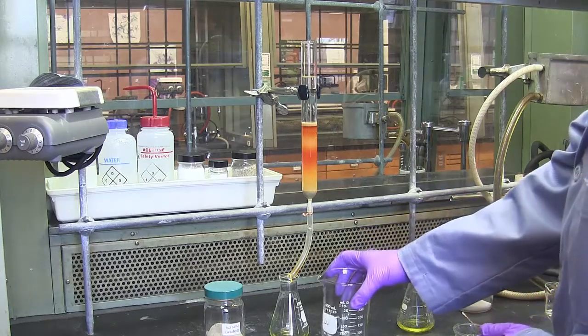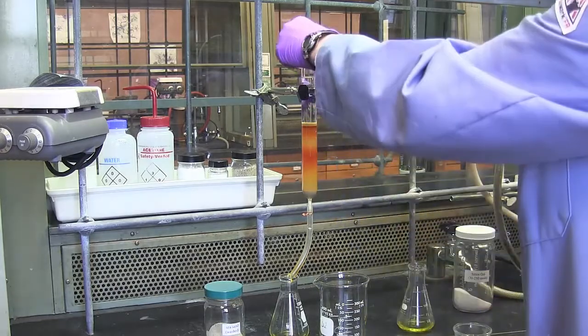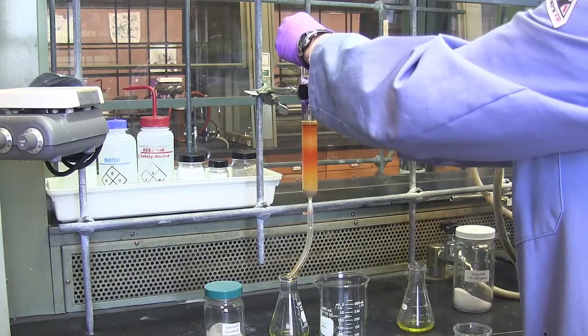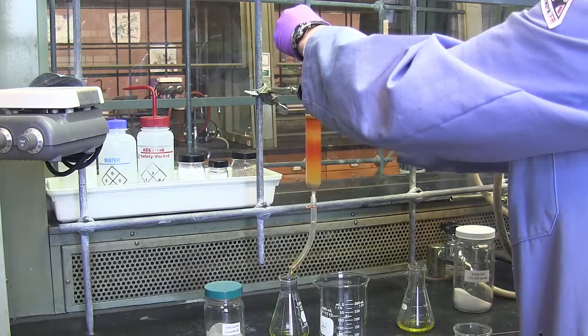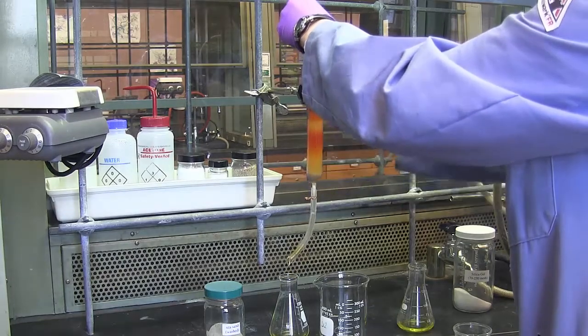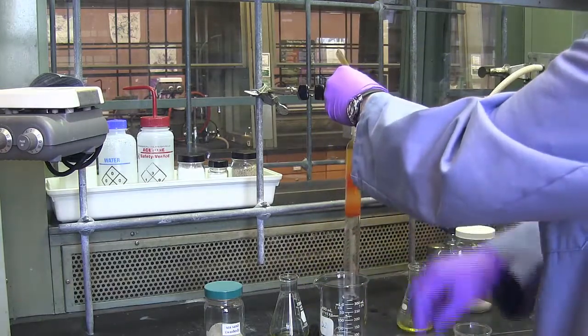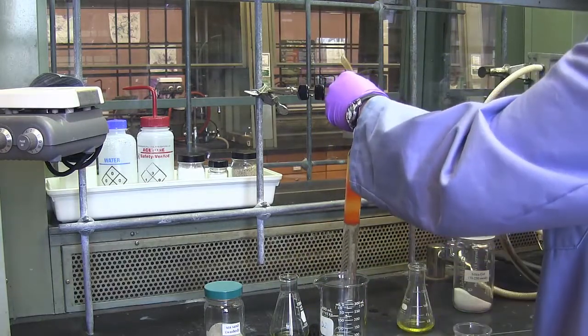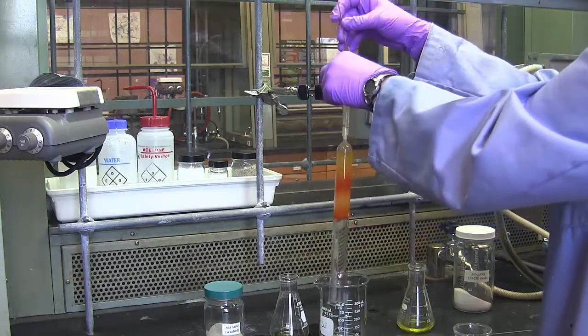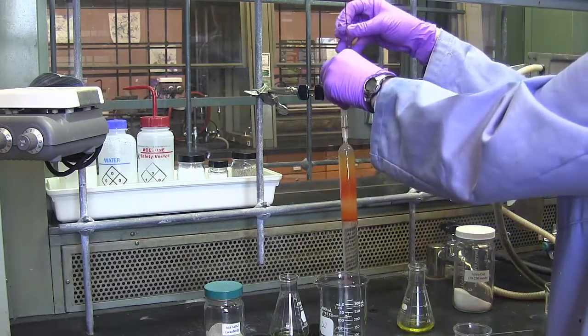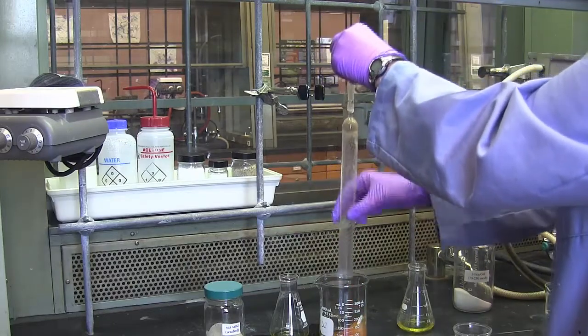When you have collected all the fractions that you wish to collect, it's very easy to clean out the column. Get a large beaker from your hood. Turn the column upside down into the beaker. Use a piece of copper wire to remove the cotton plug. As soon as you do, all the contents of the column come pouring out.